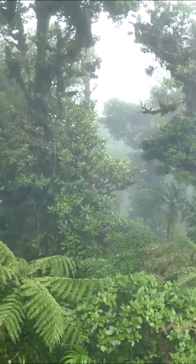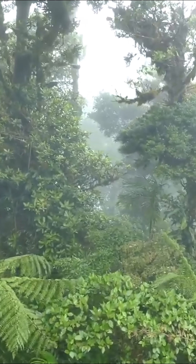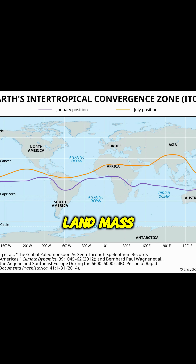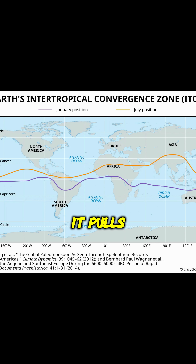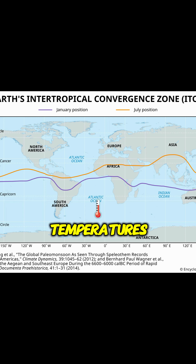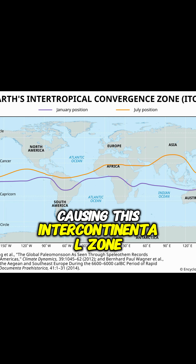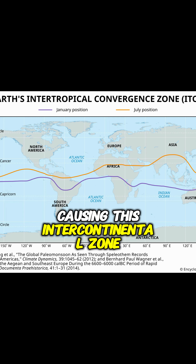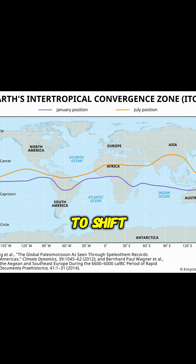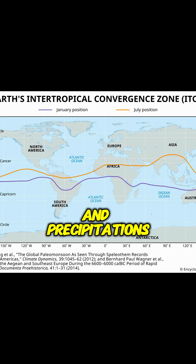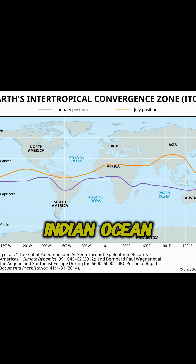But in the summertime in Asia, because the Central Asian landmass is so massive, it pulls up intense temperatures during the summer season, causing this intercontinental zone to shift upwards, pushing the winds and precipitation from the region.